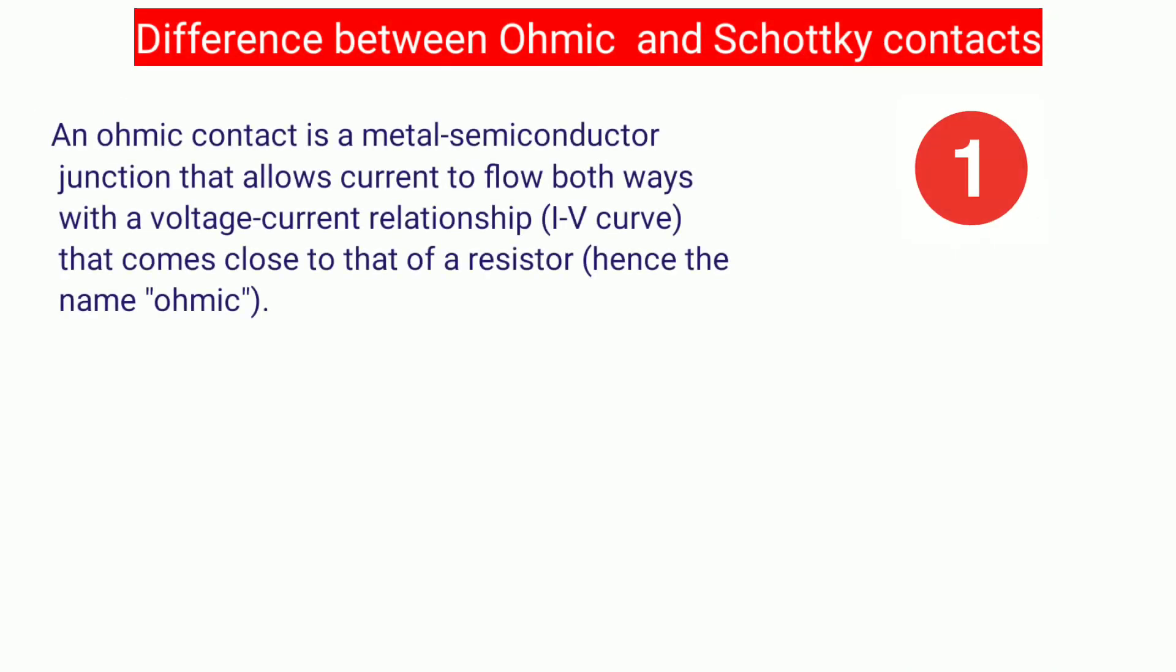Now coming to the difference between ohmic and Schottky contact. An ohmic contact is a metal semiconductor junction that allows current to flow both ways with a voltage current relationship that comes close to that of a resistor, hence the name ohmic.